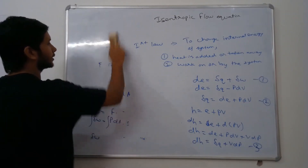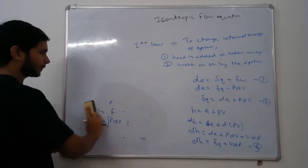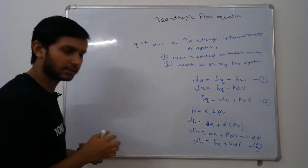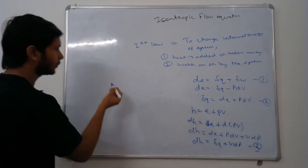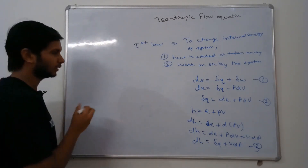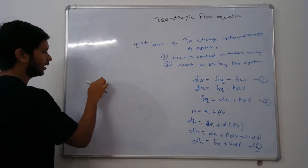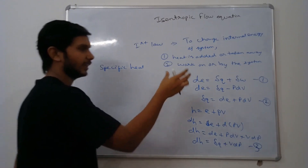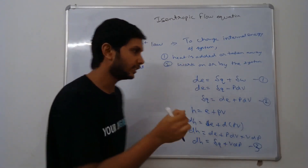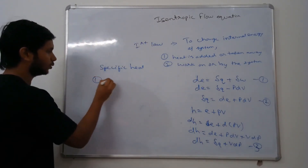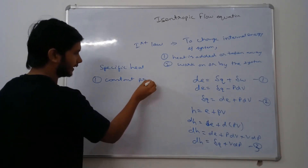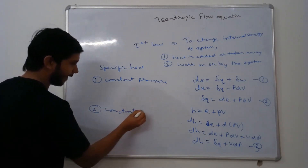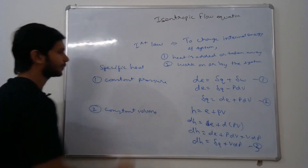We will use the specific heat concept to derive the isentropic flow equation. When adding or removing heat, you can do it in two ways: first, at constant pressure, and second, at constant volume. Specific heat at constant pressure is CP, and specific heat at constant volume is CV.